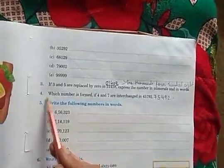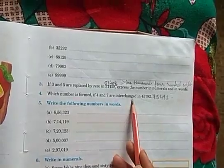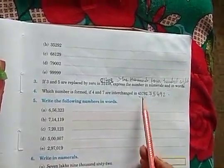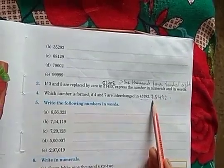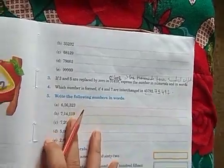Now next one is 4, which number is formed if 4 and 7 are interchanged in 45792. So if we will interchange the numbers, the number will form 75492. Thank you.